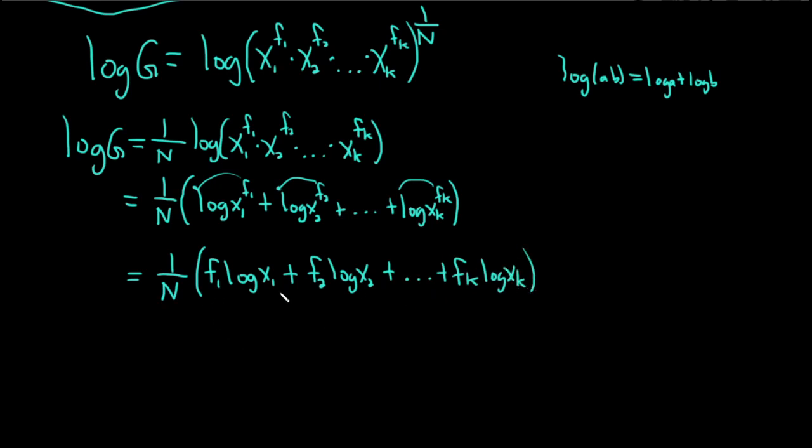And this can be written as a sum. So this is equal to 1 over N, then we have a sum, and let's use i, so i runs from 1 to k, and this will be f sub i times log of x sub i. And that would be the formula for the log of G.